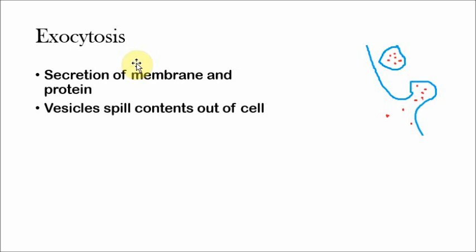We've already encountered it before actually, and it's the process by which the cell secretes membrane and protein. These vesicles coming from the Golgi body and the endoplasmic reticulum will actually spill their contents outside of the cell. Essentially, these vesicles that are already in the cell will fuse membranes with the cell membrane, allowing their contents to spill outward. That's all there is to exocytosis.